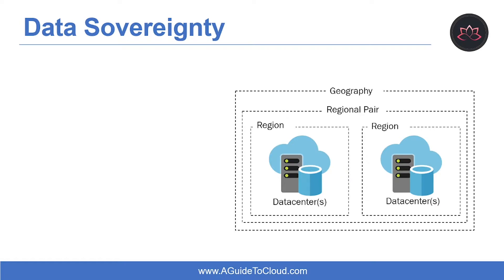Each Azure region is paired with another region within the same geography, forming a regional pair. The exception is Brazil South, which is paired with a region outside of its geography. Across region pairs, Azure serializes platform updates so that only one paired region is updated at a time.